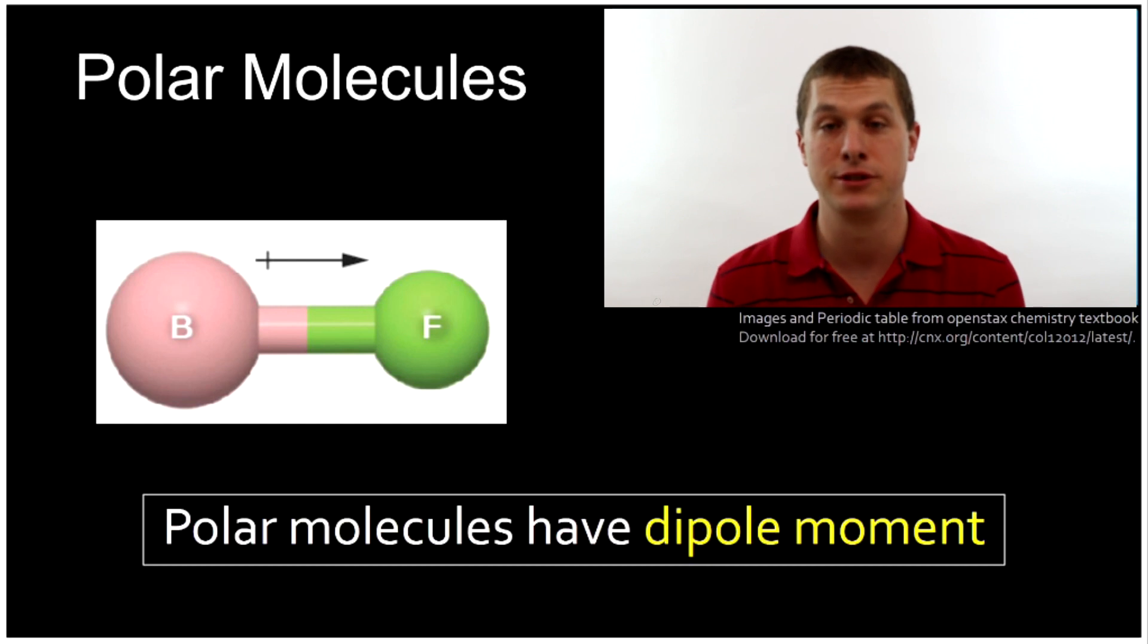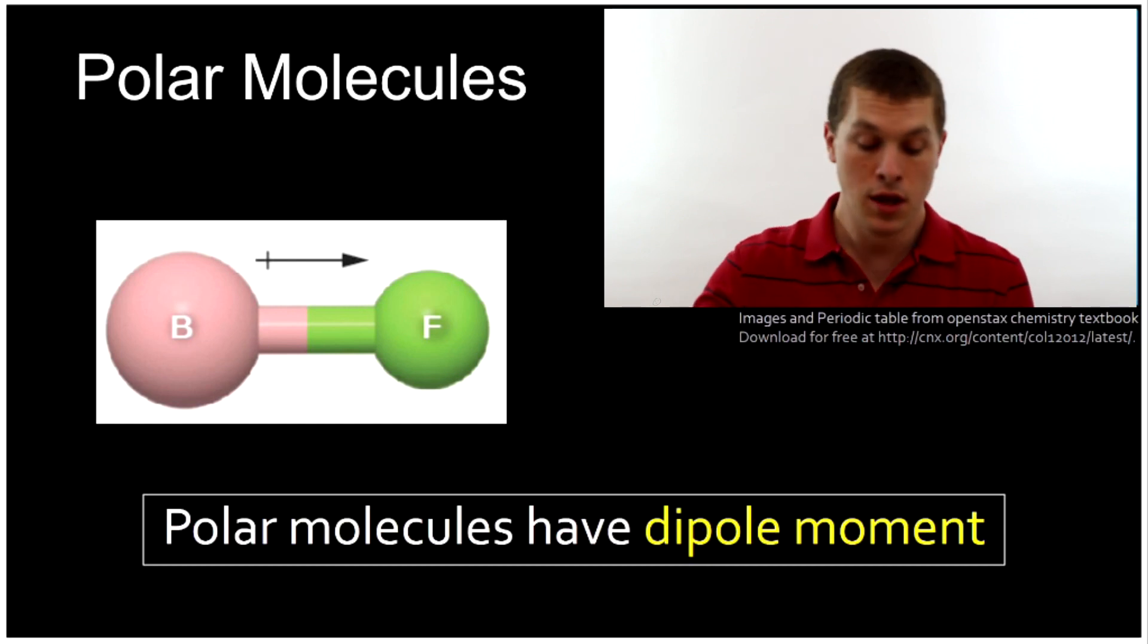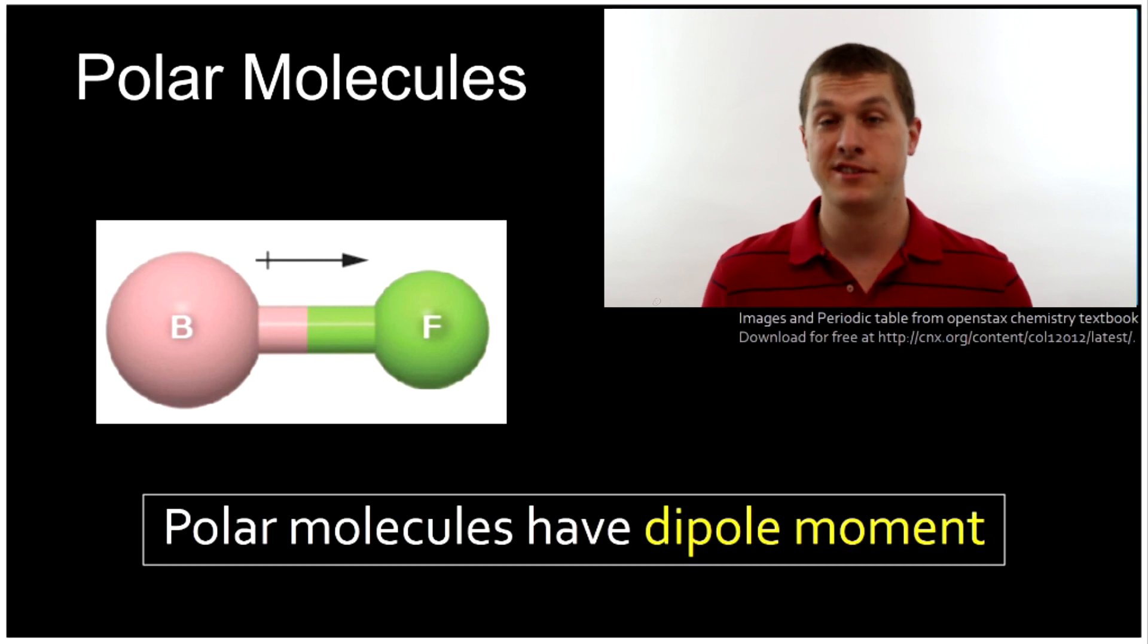Welcome to this episode of Real Chemistry. I'm Dr. Morse. Today we're going to be talking about polar molecules. A polar molecule is one in which there's an uneven distribution of electrons in a bond, and that's due to a difference in electronegativity in the atoms.